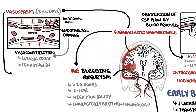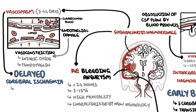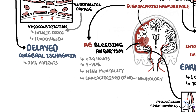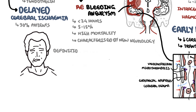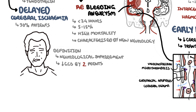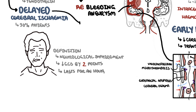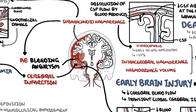Vasospasm can cause delayed cerebral ischemia and infarction. Delayed cerebral ischemia occurs in approximately 30% of patients with aneurysmal subarachnoid hemorrhage. The definition of delayed cerebral ischemia requires the occurrence of a focal neurological impairment or a decrease of at least two points on the Glasgow Coma Scale lasting at least one hour. Delayed cerebral ischemia may result in cerebral infarction, contributing to possible death with increased mortality.